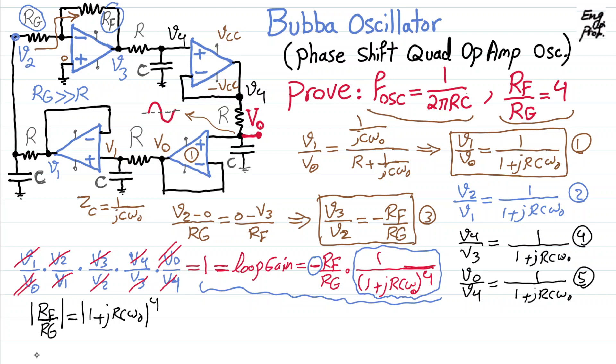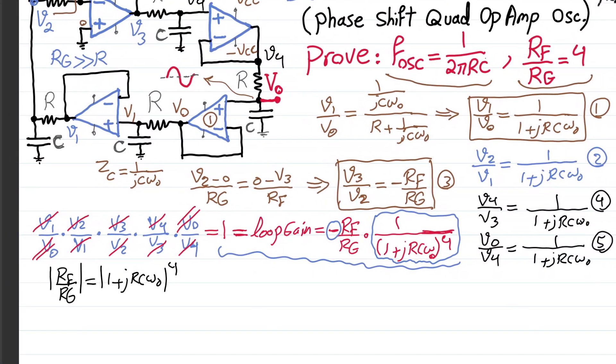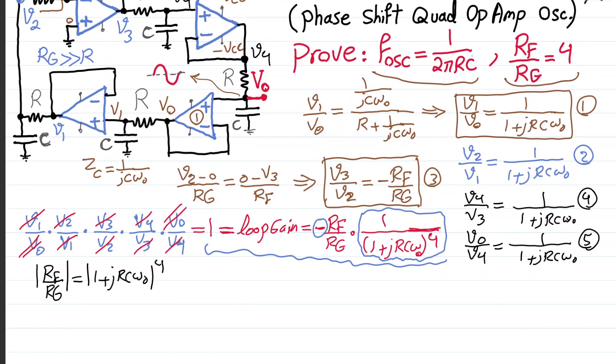For phase, we are saying, okay, so for phase, we are saying phase of 1 plus jRCω naught as a complex number should be equal to π over 4 because we have to the power of 4 in the denominator. So, if this phase is π over 4, the complex number to the power 4 in the denominator would have a phase of π, which is exactly what I want.